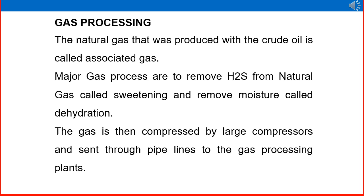Gas processing: the natural gas that is produced with the crude oil is called associated gas. The major gas processes are to remove H2S from natural gas — called sweetening — and to remove moisture — called dehydration. The gas is then compressed by large compressors and sent through pipelines to the gas processing plant.